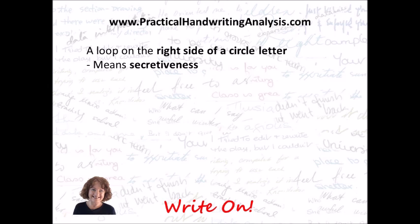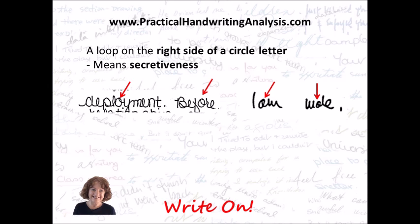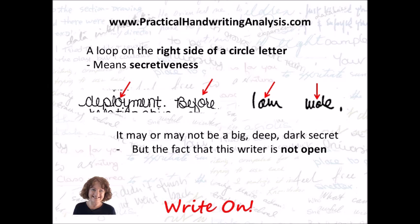A loop on the right side of a circle letter means secretiveness. It may or may not be a big, deep, dark secret, but the fact is this writer is not open and can therefore make others mistrust them.